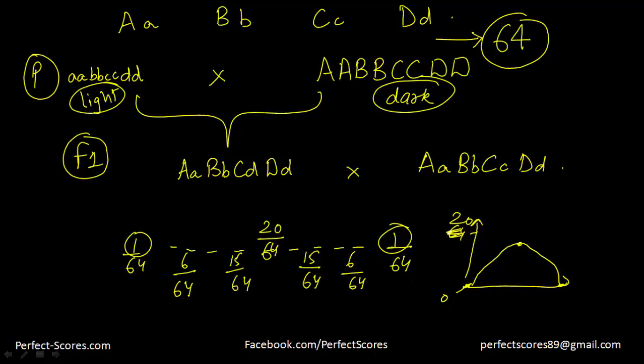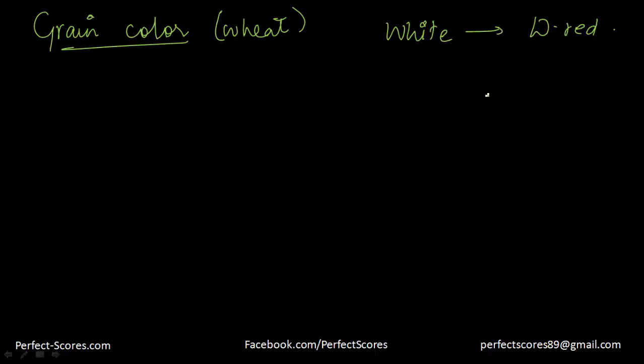Another example of polygenic inheritance is the grain color in wheat. So specifically in wheat, wheat grains vary in color from white to dark red. That depends on the amount of the red pigment that the grains contain. Now for grain color in wheat, there are three genes that are responsible for controlling the color and each of the three genes has two alleles, one that codes for a red pigment, the other that codes for no pigment, just like we had in skin color.